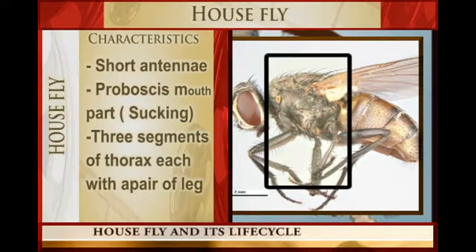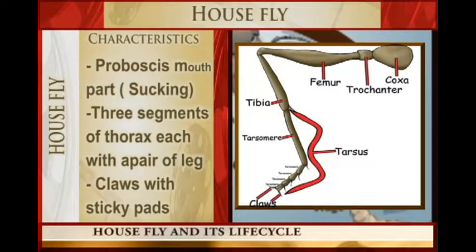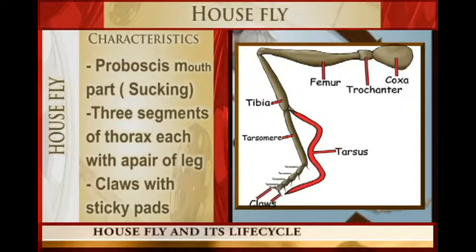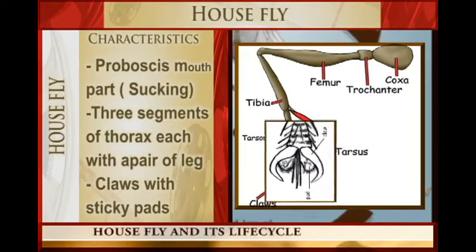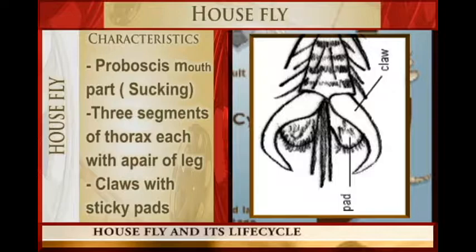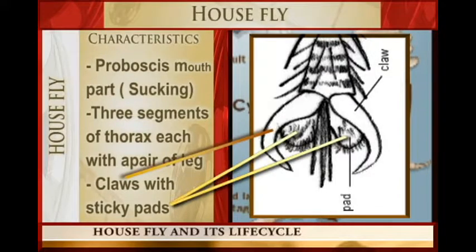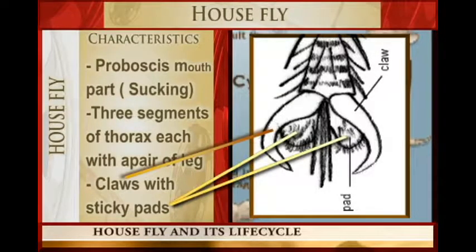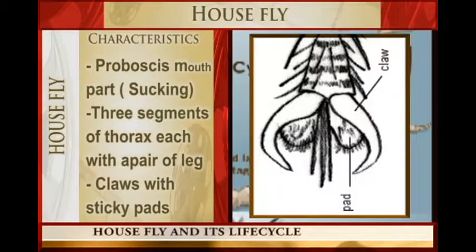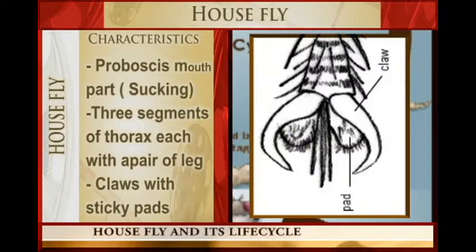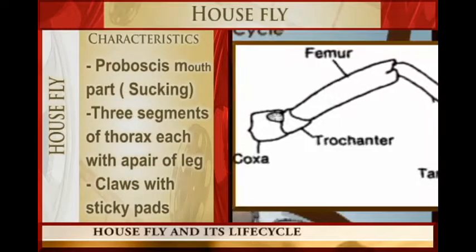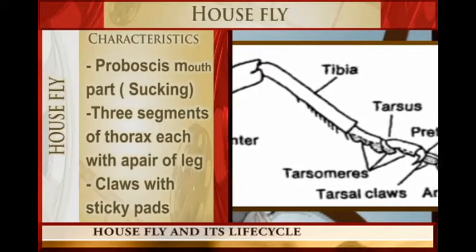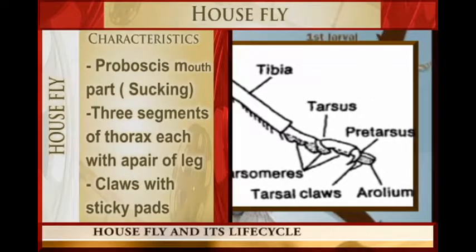If we look at the leg, it has a claw. In the middle of the claw there is a sticky pad. These help the insect to move upside down using the sticky pads, and also to move on slippery and rough substances by use of the claw. So it has the claw and it has the sticky pads.